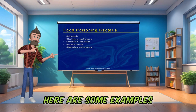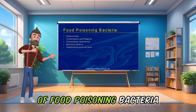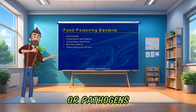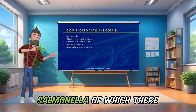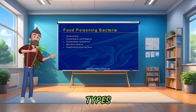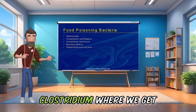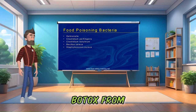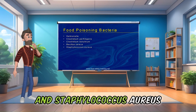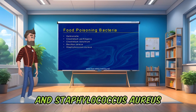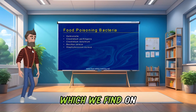Here are some examples of food-poisoning bacteria or pathogens. Salmonella, of which there are about 1,500 different types. Clostridium, where we get Botox from. Bacillus cereus. And Staphylococcus aureus, which we find on us.